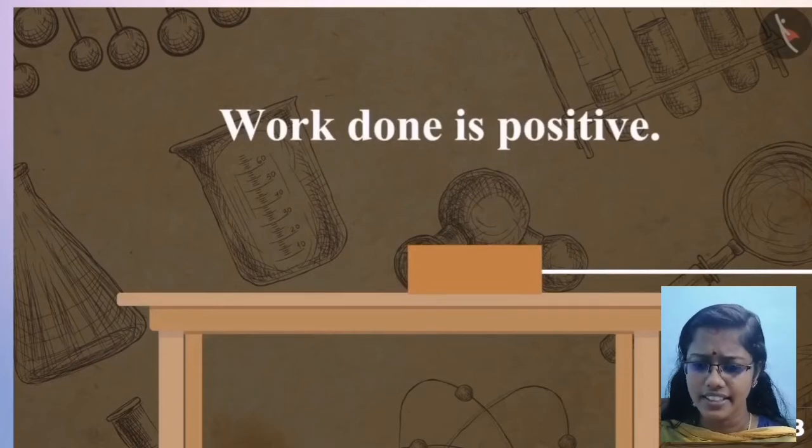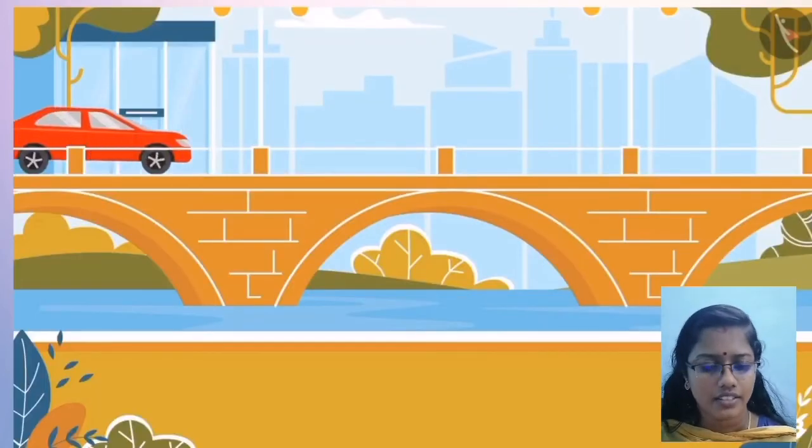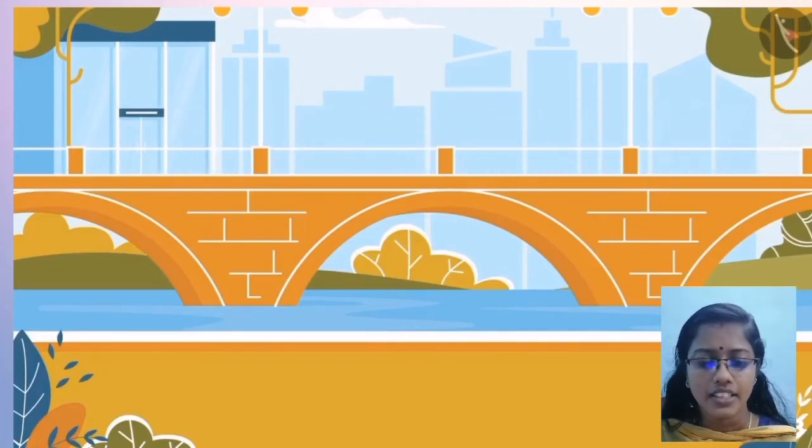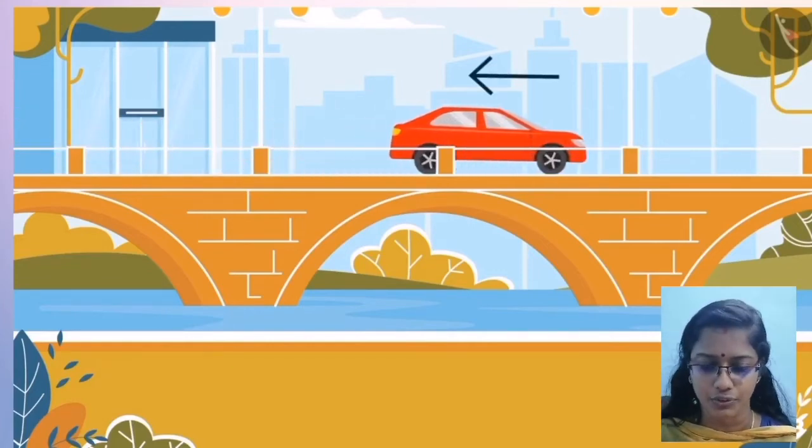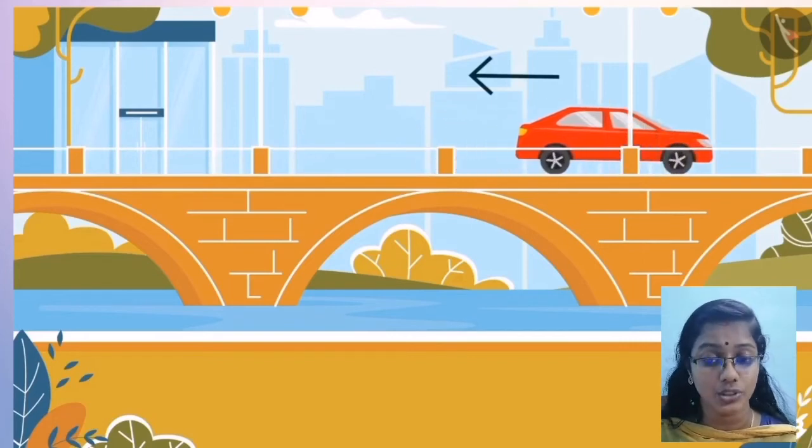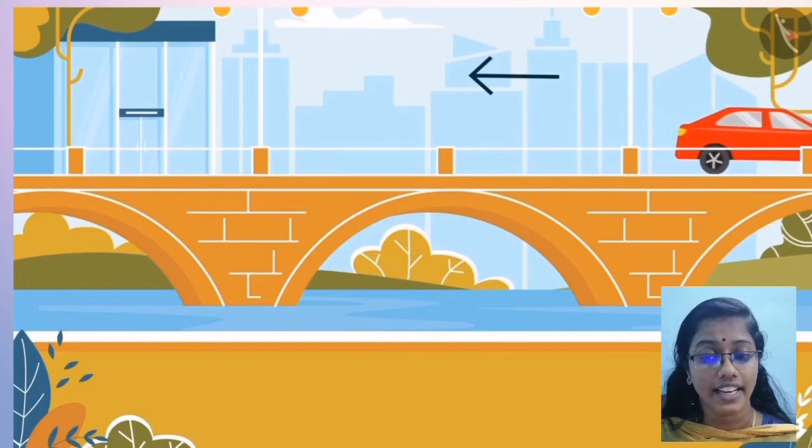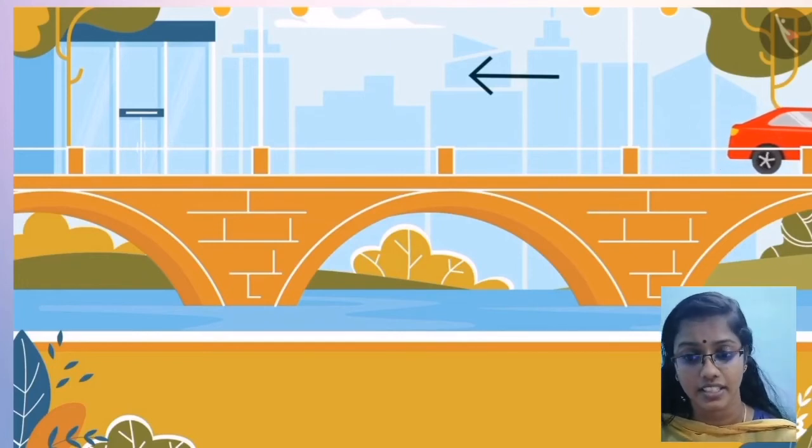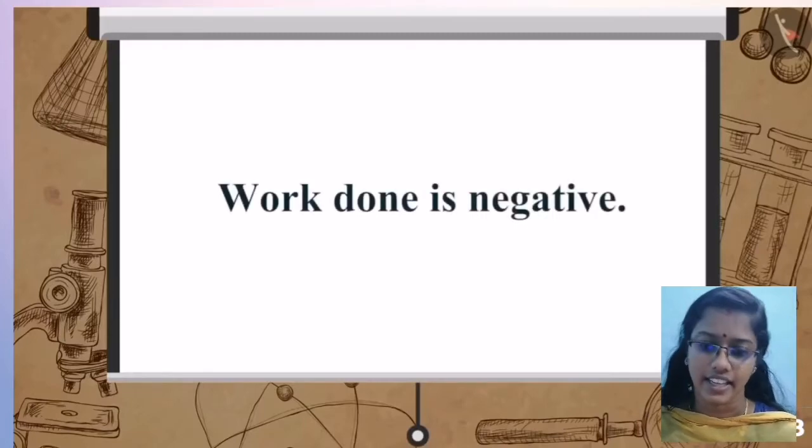Now, let us consider another example. Consider a car moving from left to right. Imagine that a retaining force is applied against the motion. That is, the force applied towards left. Here, the force and displacement occur in opposite directions. So in this case, the work done is negative.